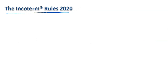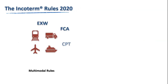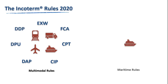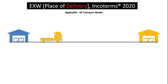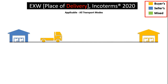Let's begin understanding each incoterm. There are seven incoterms which can be used in all modes of transport — road, rail, air, or water — and the remaining four are used for sea or inland waterway transport only. We will follow the original representation by ICC. In the charts, blue color means seller's responsibility, yellow means buyer's responsibility, and green means shared responsibility.